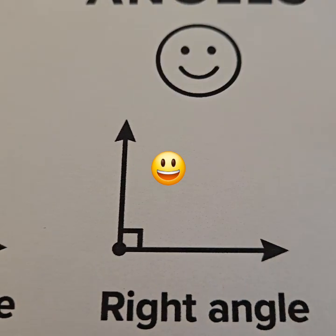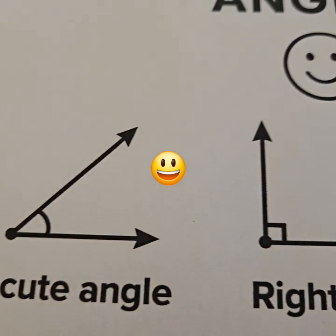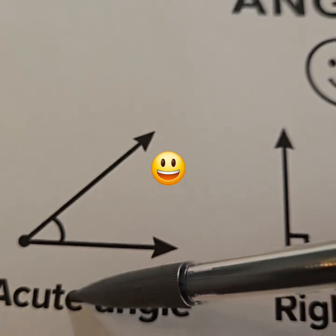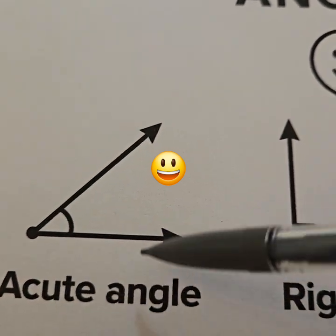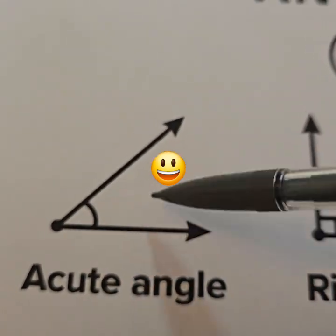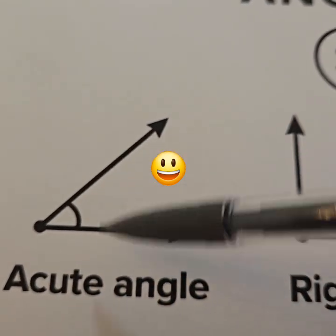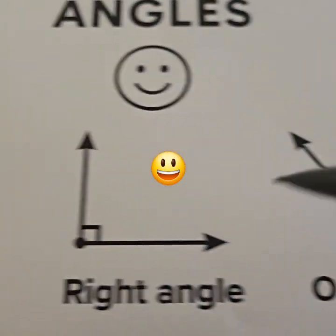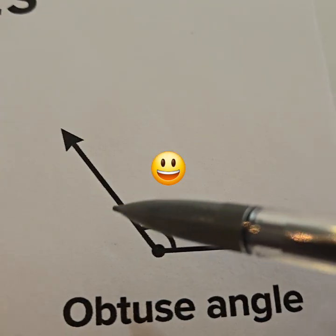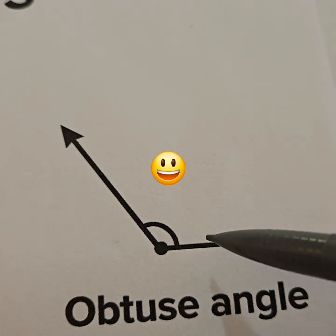If it is smaller than 90 degrees, it's called an acute angle. That's an example of an acute angle. The angle — that's the amount of rotation —